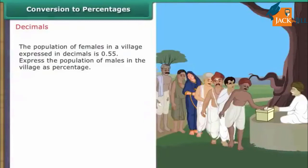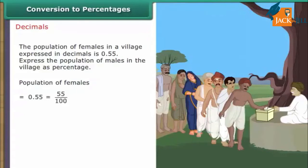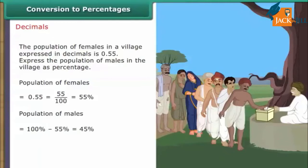Decimals. The population of females in a village expressed as a decimal is 0.55. Express the population of males as a percentage. Population of females = 0.55 = 55/100 = 55%. Population of males = 100% − 55% = 45%. Males in the village form 45% of the total population.